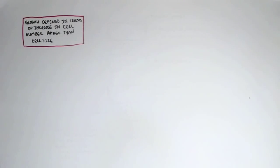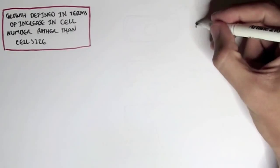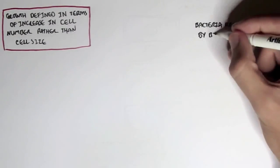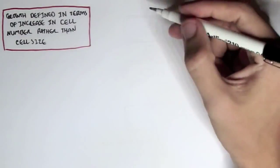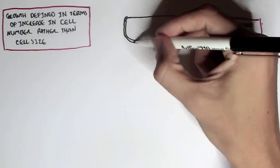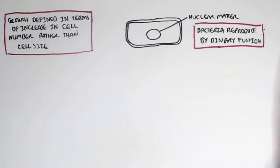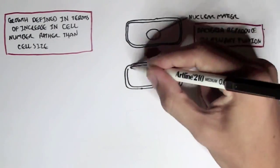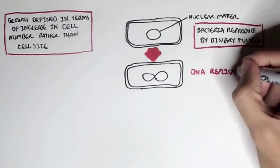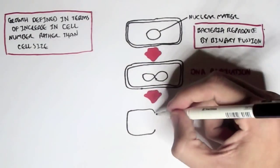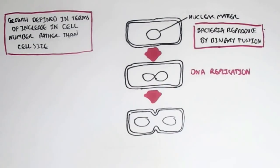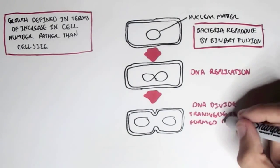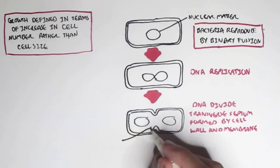And how the bacteria replicate is not through mitosis and meiosis, but through a process known as binary fusion. So bacteria reproduced by binary fusion. So here we have a simple bacteria with the DNA inside, circular DNA, might I say, nuclear matter. Next, the DNA will be replicated during binary fusion. Replicated like so. And then the DNA will divide and what's called a transverse septum will be formed by the cell wall and the membrane. So sort of like a dent. So here we have the transverse septum.